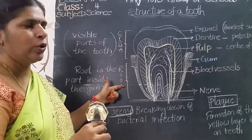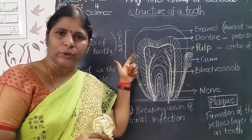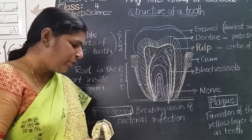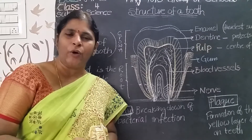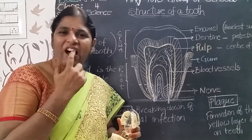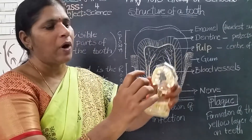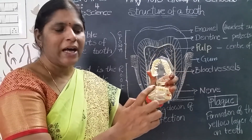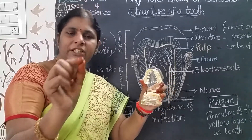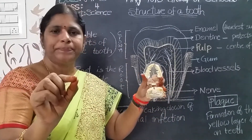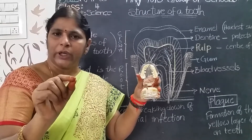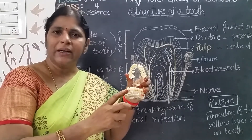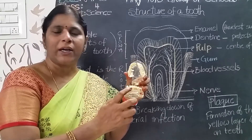Crown is the visible part of the tooth. When we smile, we can see the crown. This is the crown — the visible part of the tooth that we can see when we smile.